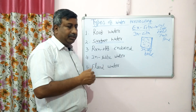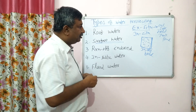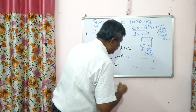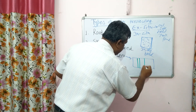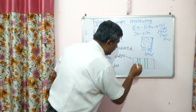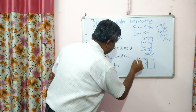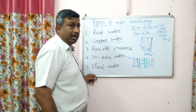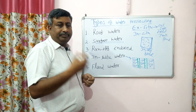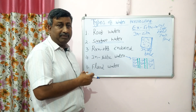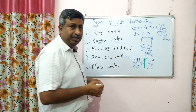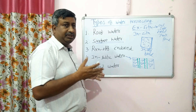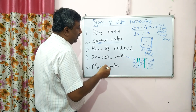For in-situ water harvesting, some modifications are made so that water is stored in the field. For example, trenches can be made between the rows of crops to store water, and the space between trenches can be used for growing crops. Types include inter-row water harvesting, modified inter-row water harvesting, and inter-plot water harvesting.